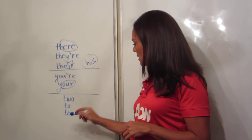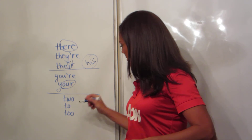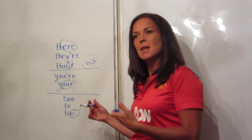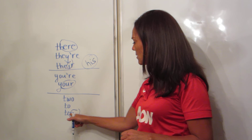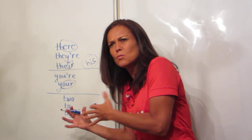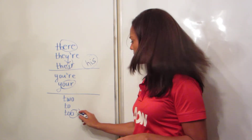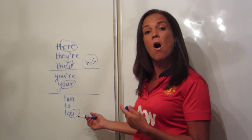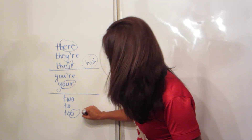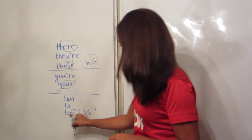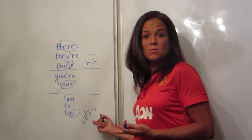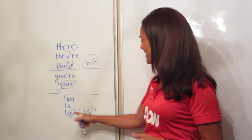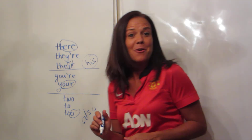Too with that extra O is too many O's — it's an excess of something. Think of that extra O as too many O's. T-O-O also means 'also.' It means also, so 'me too' — like 'me also.' So me too.